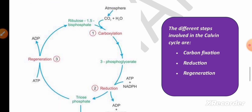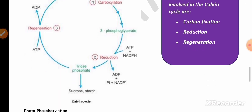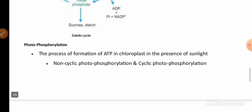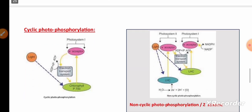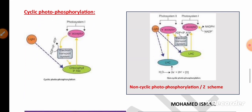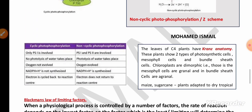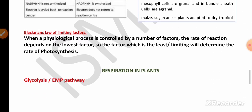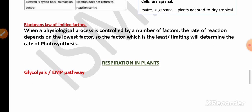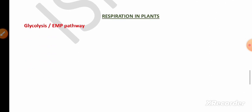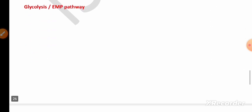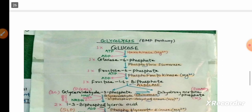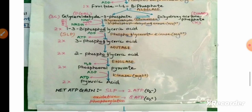In Photosynthesis in Higher Plants, remember the Calvin cycle (C3 cycle) — its three steps are very important. Also remember cyclic and non-cyclic photophosphorylation. Differences may also be asked. Kranz anatomy is also very important, as is Blackman's law of limiting factors.